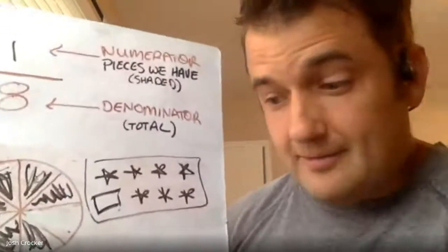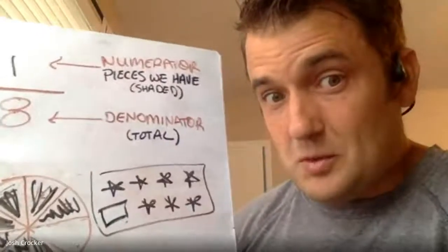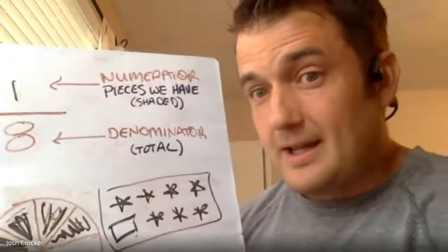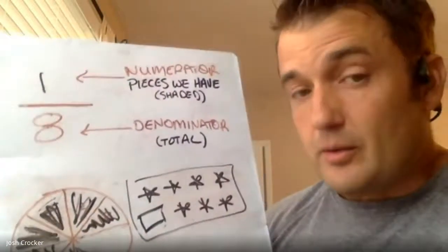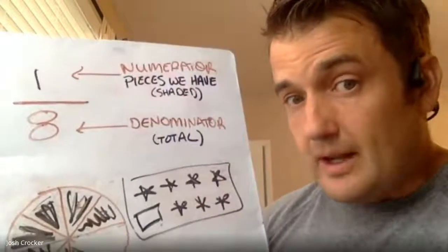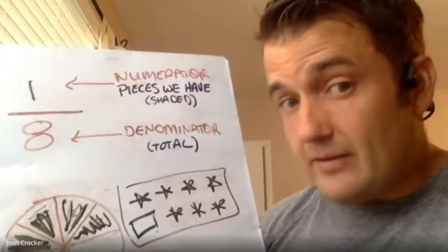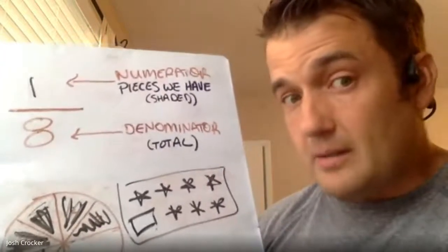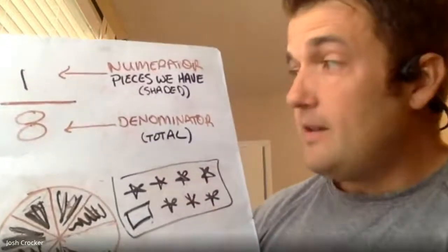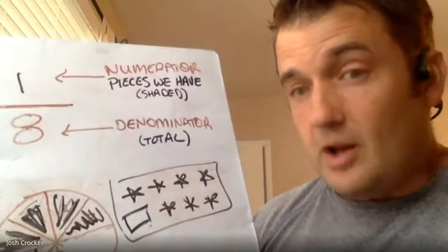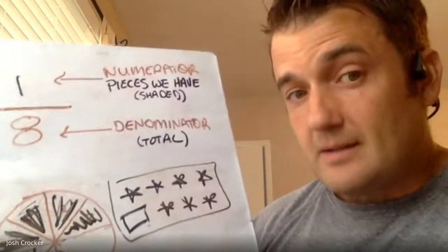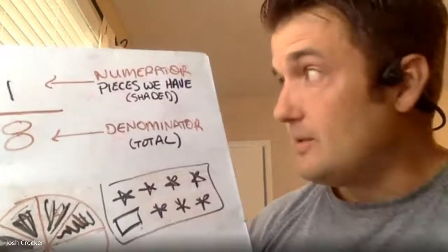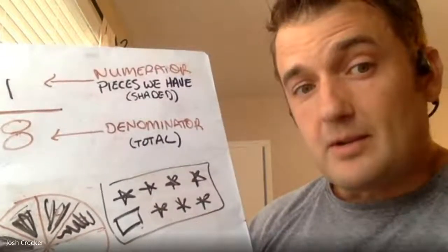So now I'm going to summarize. Fractions have two parts: a numerator and a denominator. The numerator is the top number and it tells you how many pieces you have — it's the part you're talking about. The denominator tells you the total — all the pieces; if everything was there, there would be eight in this case. So numerators on top, denominators on bottom. Day one of fractions in the books!